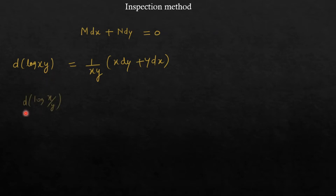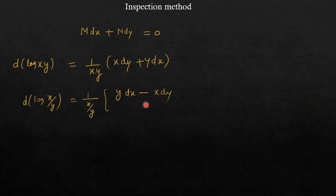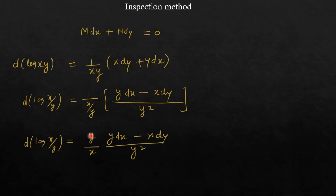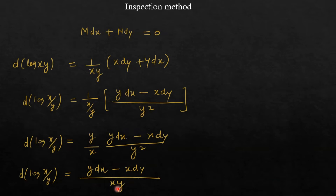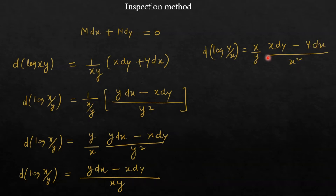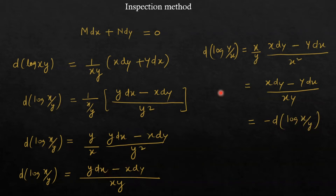The derivative of log(x/y): first take derivative of log, giving 1/(x/y), then derivative of x/y by the quotient rule gives (y dx − x dy)/y², so the y's cancel and you get (y dx − x dy)/(xy). The derivative of log(y/x) gives (x dy − y dx)/(xy), which is the negative of the derivative of log(x/y) — they are just negatives of each other.